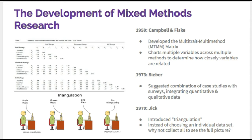Some of the earliest research done using mixed method research was done by Campbell and Fisk in their 1959 study, Convergent Indiscriminate Validation of the Multi-Trait Multi-Method Matrix. They developed the MMTM in order to compare multiple variables by testing them in multiple methods and analyzing how the variables are related. The chart pictured is from Campbell and Fisk's 1959 study. The variables — in this case personality traits — were compared against three different collections of data: self-staff ratings and teammate ratings. The results were then compared to one another in a matrix format in order to find similarities.